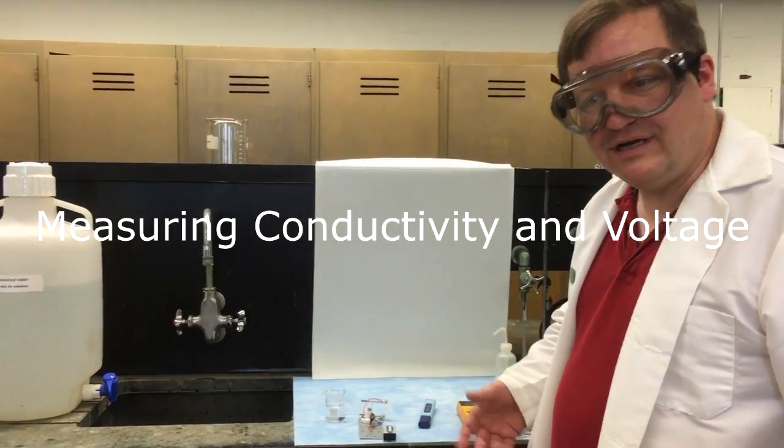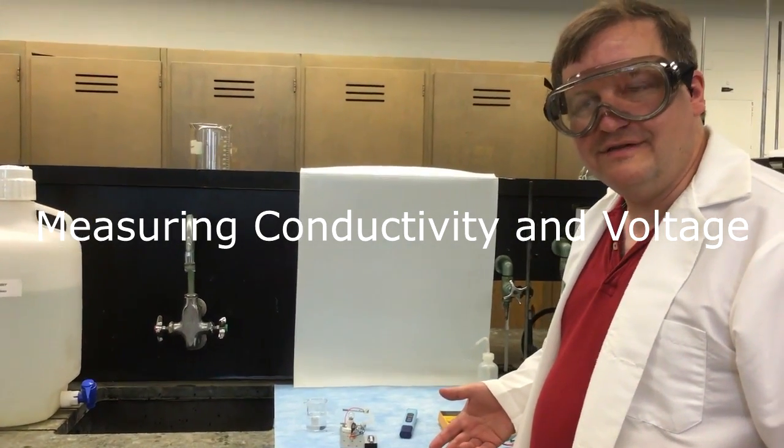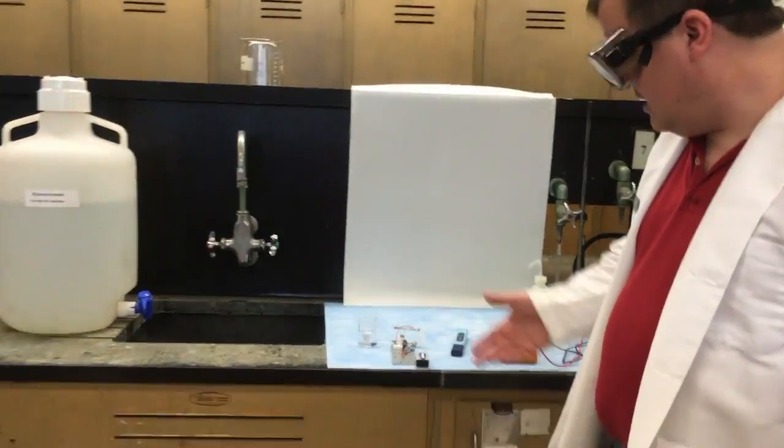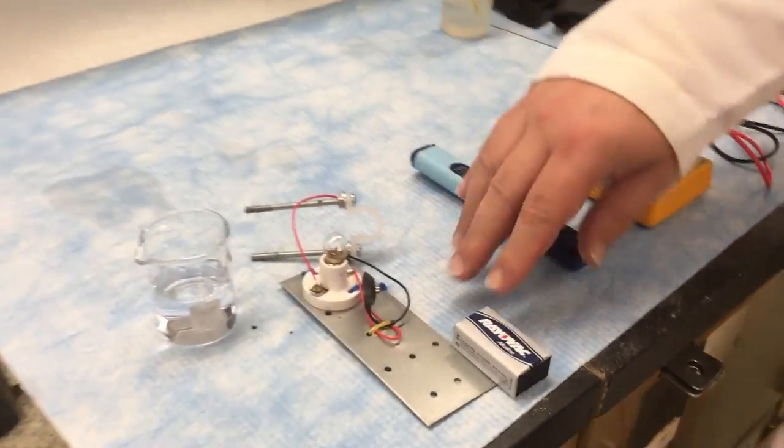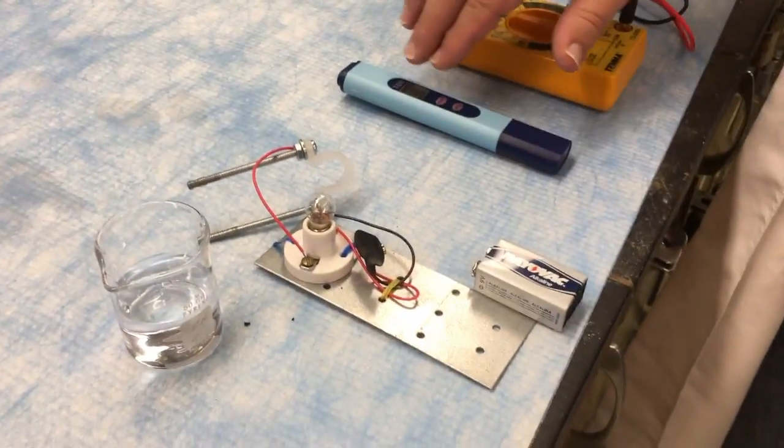Okay, so now we're going to go over some apparatus we use for the conductivity and electrochemistry experiment. If you look here I have two different types of conductivity. This is a home-built one and this is a commercial one.